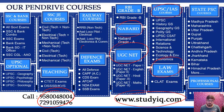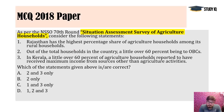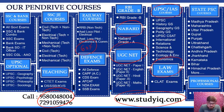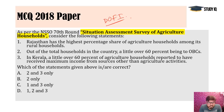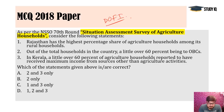The question on NSSO 70th Round — Situation Assessment Survey of Agricultural Households — came because of the ongoing discussion about doubling of farmers' income. It's been a huge issue. Many steps were taken: soil health cards, crop insurance schemes. Due to increased farmer suicide cases and acute agricultural crisis, this question became very relevant.